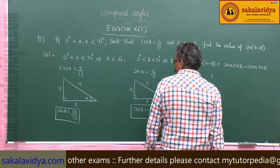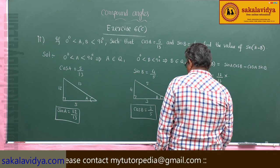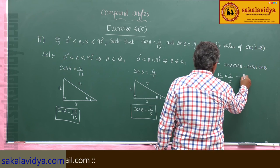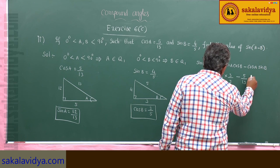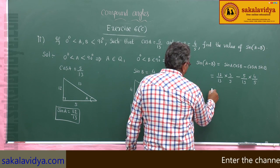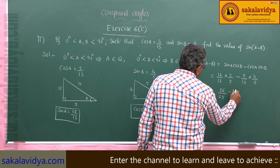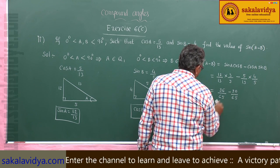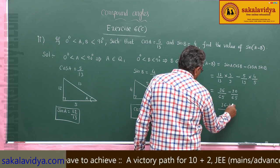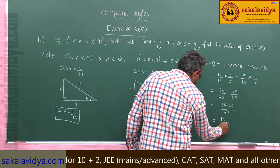So, sin a equals 12 by 13, multiplied by cos b which is 3 by 5, minus cos a which is 5 by 13, multiplied by sin b which is 4 by 5. This gives 36 by 65 minus 20 by 65. The LCM is 65, so 36 minus 20 is 16 by 65.